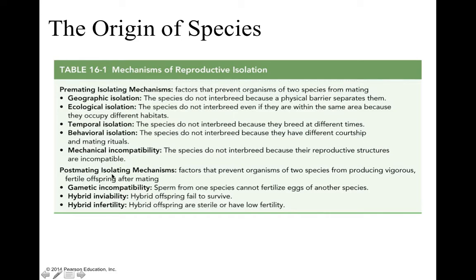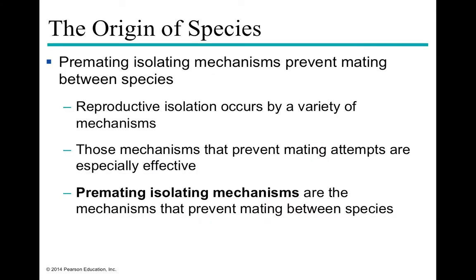Post-mating isolating mechanisms don't prevent the mating event itself, but prevent the creation of viable offspring. For example, sperm may not be able to fertilize the egg, or a hybrid offspring may implant but fail to come to term — hybrid inviability. Or the offspring do come to term, like a liger — a cross between a lion and a tiger — but are sterile or have very low fertility.